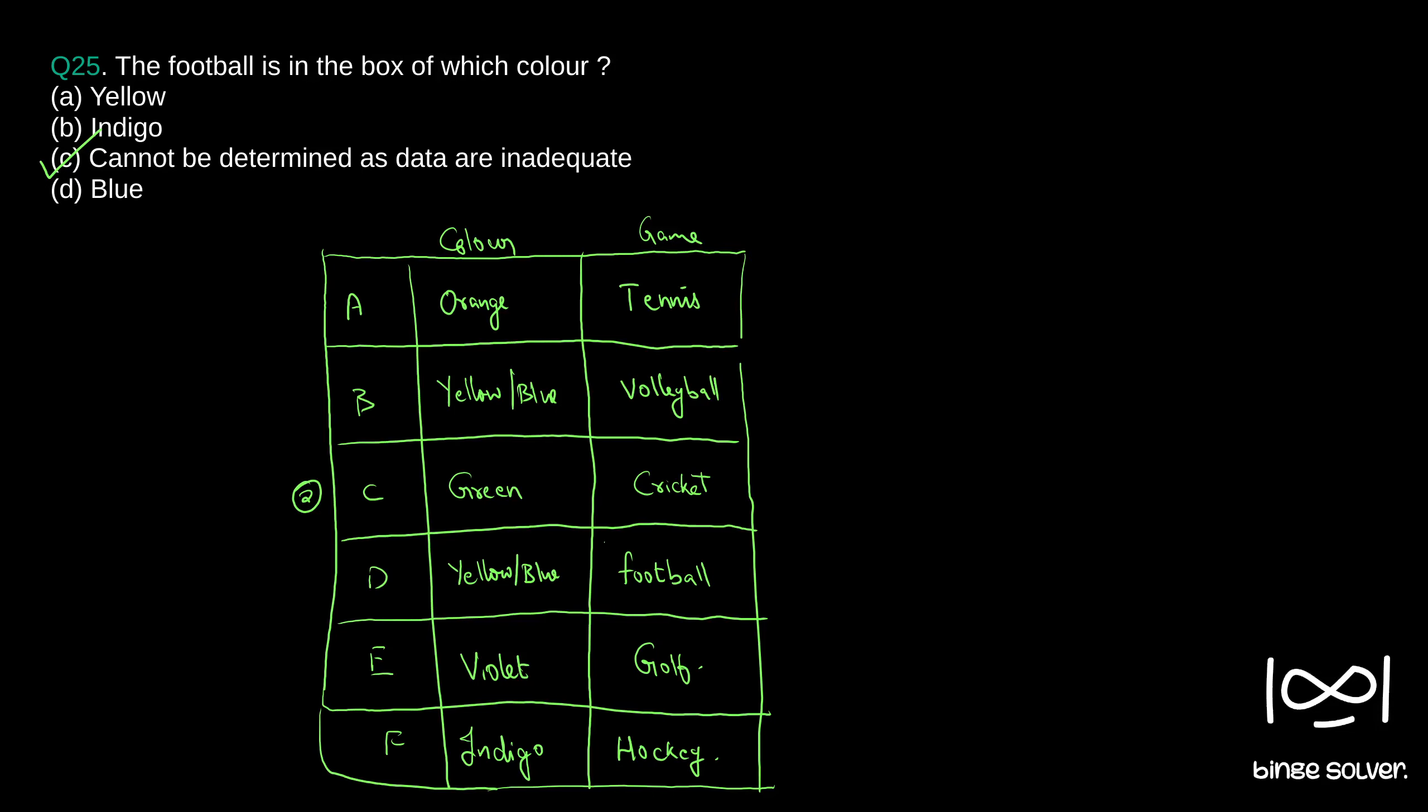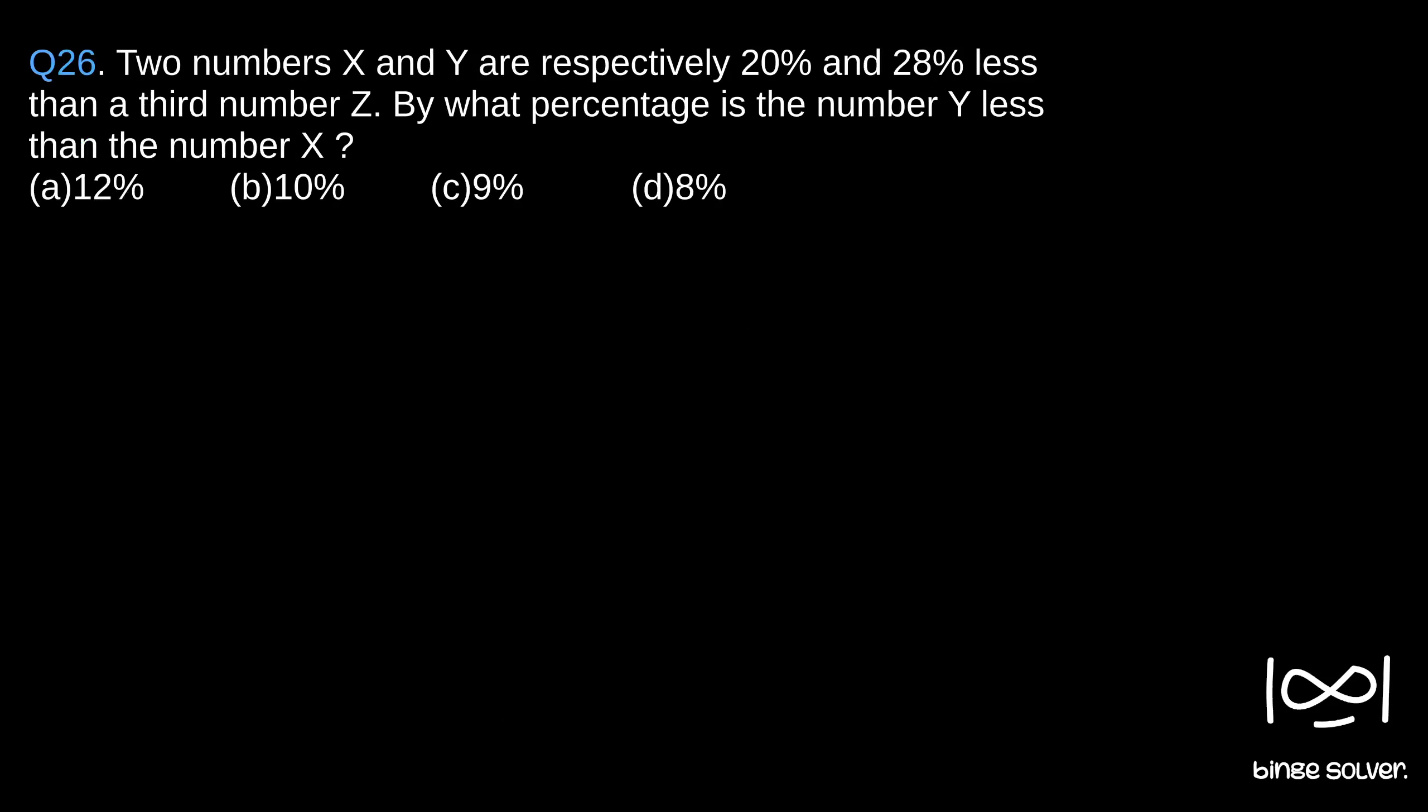Question 26: Two numbers X and Y are respectively 20% and 28% less than a third number Z. By what percentage is the number Y less than the number X? In such questions, it is better to assign random numbers to X, Y, and Z so that we can easily find the percentage.